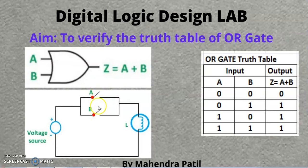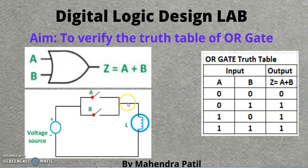Whenever both switches are open, it means the input is 0 0. When you pass current, the current will not flow because there is a circuit break. So the current will not flow and the lamp will not glow. That's why the output is 0. For 0 0, the output is 0.